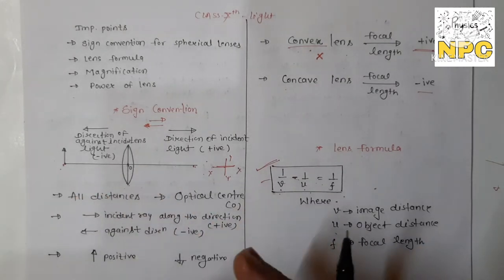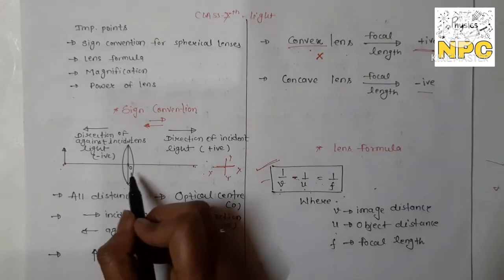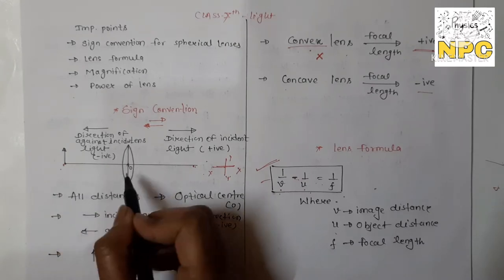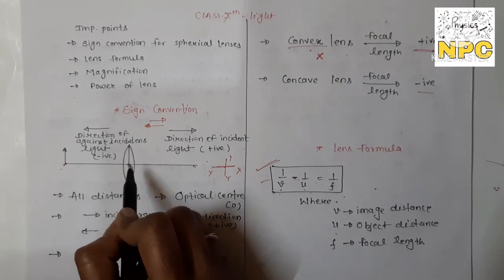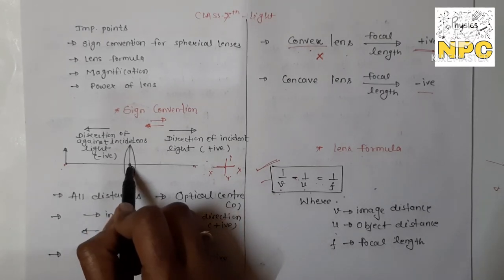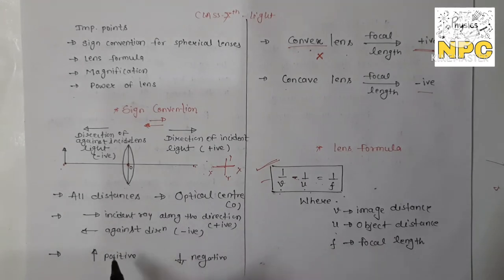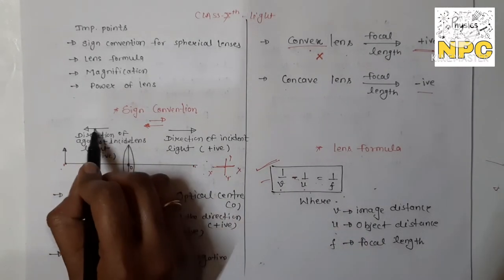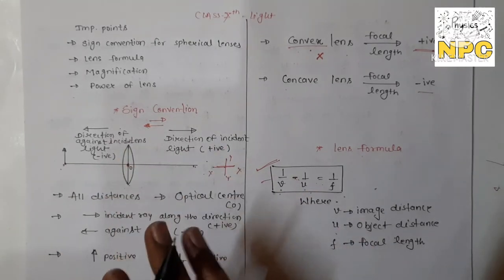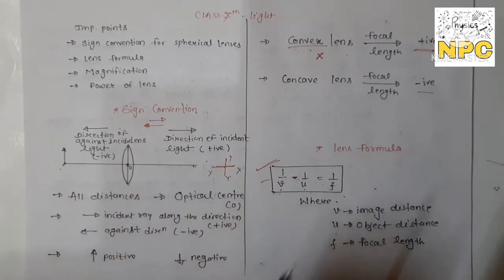Now we will learn some important points of this sign convention. The first point: all distances are measured from the optical center — just as in the mirror we considered the pole, here we will say optical center. The second point: distances measured in the same direction as the direction of the incident ray are taken as positive, and against the incident ray they are considered negative.